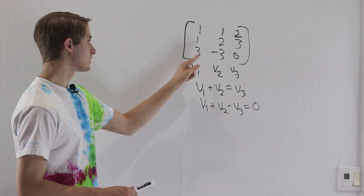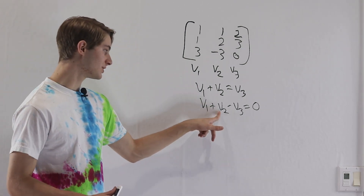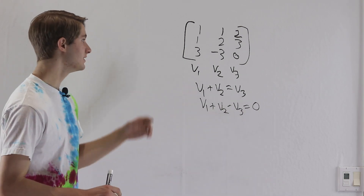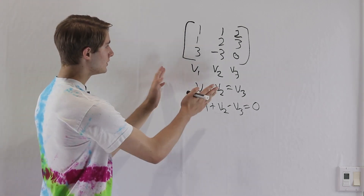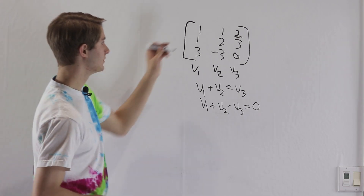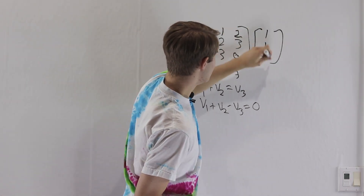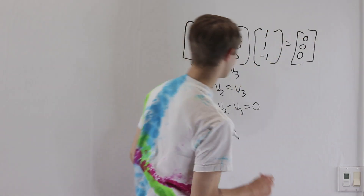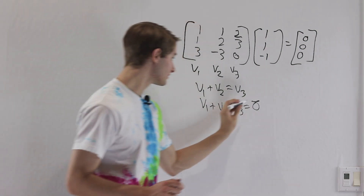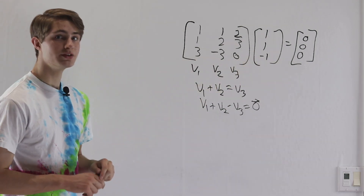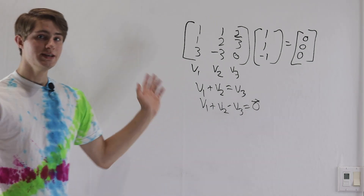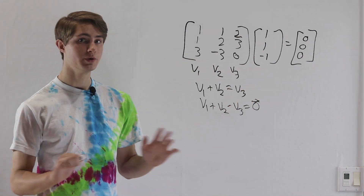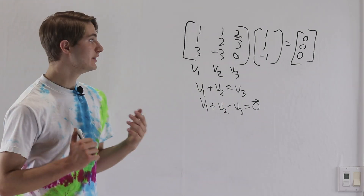This is a linear combination of the column vectors of our matrix equaling zero, so we say these column vectors are linearly dependent. When the column vectors are linearly dependent, there's no way to get from an output back to an input. For example, if we multiply this matrix by (1,1,-1), we get V1 + V2 - V3 = (0,0,0). So for any output, if we find one input, we can just add the vector (1,1,-1) to get a new input with the same output. There's no way to figure out which was the actual input, and therefore this matrix has no inverse.